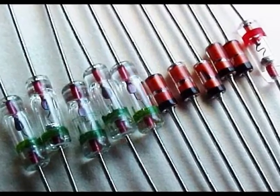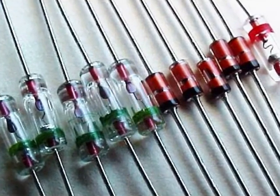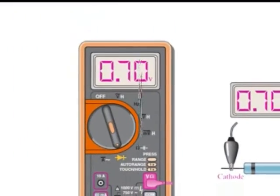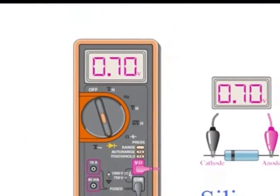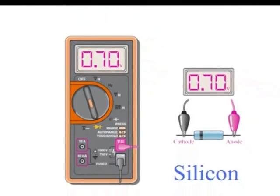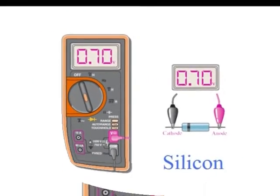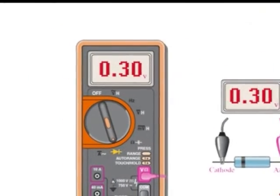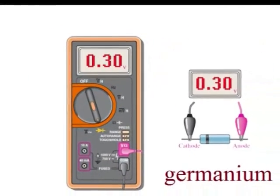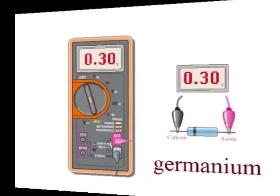You can easily distinguish silicon and germanium diodes. Silicon diodes should show approximately 0.7 volts and germanium diodes should show 0.3 volts.